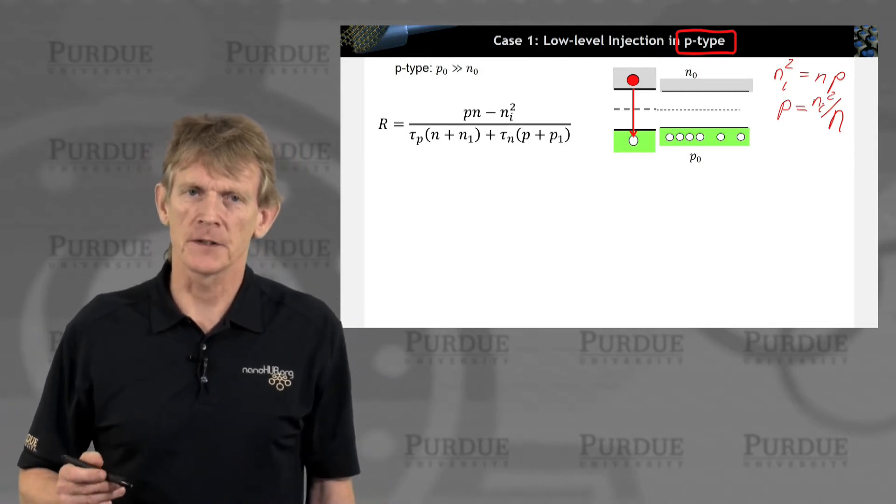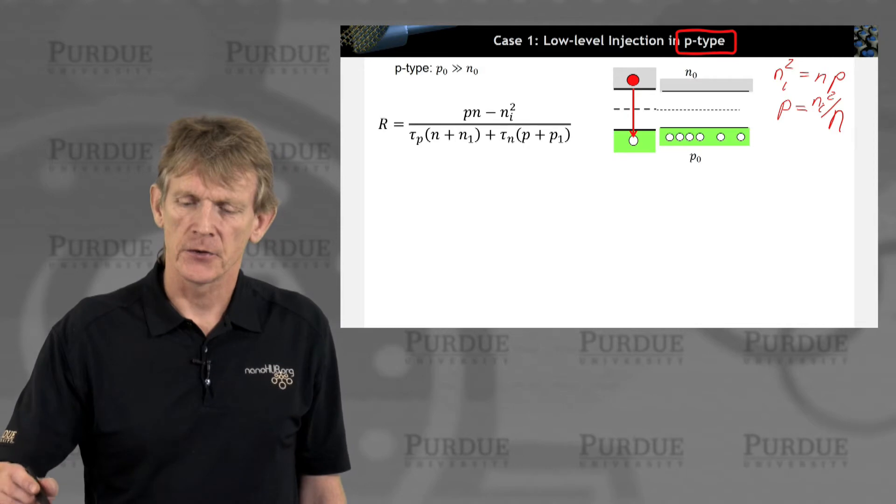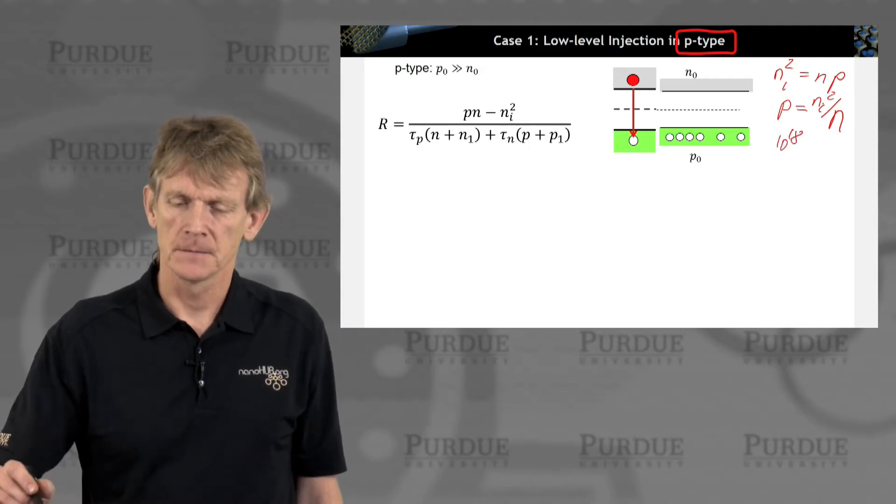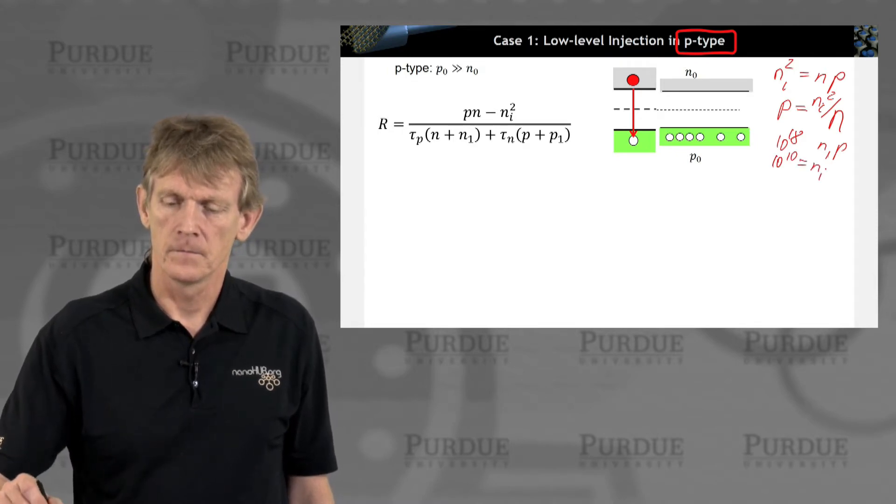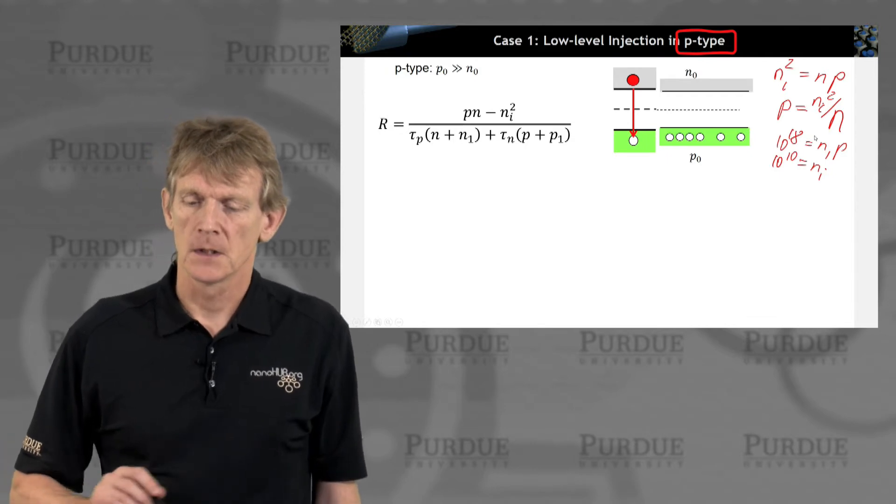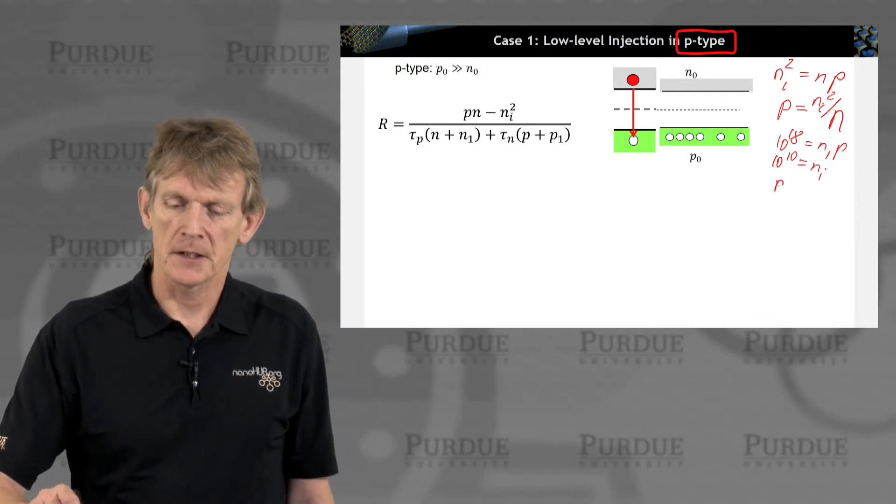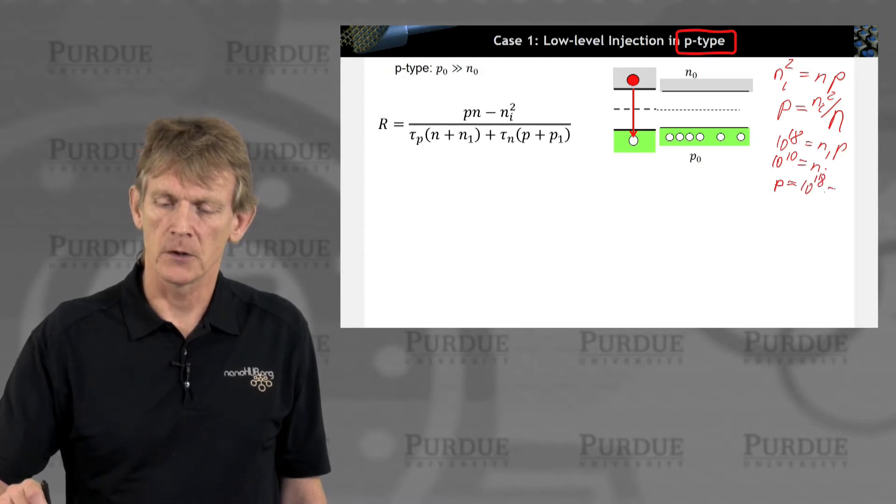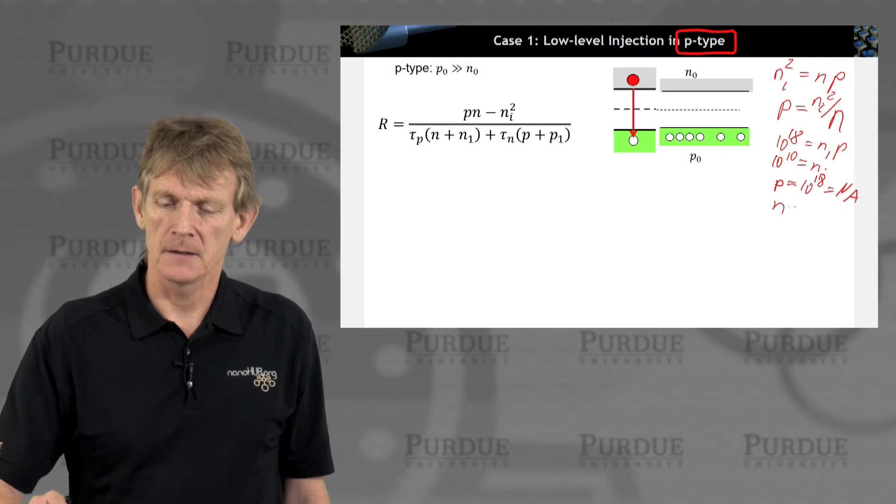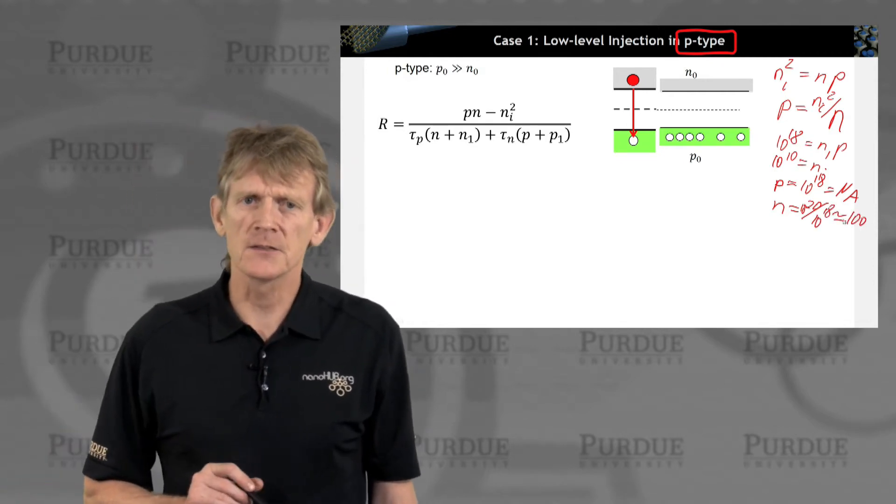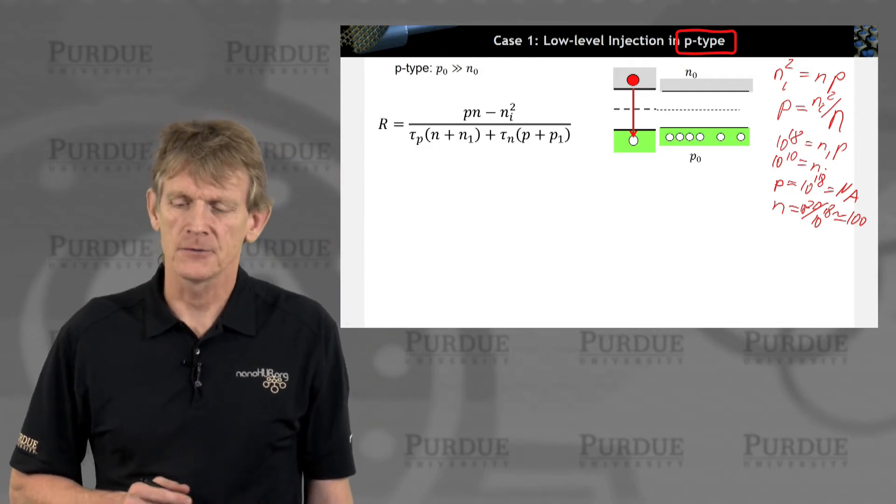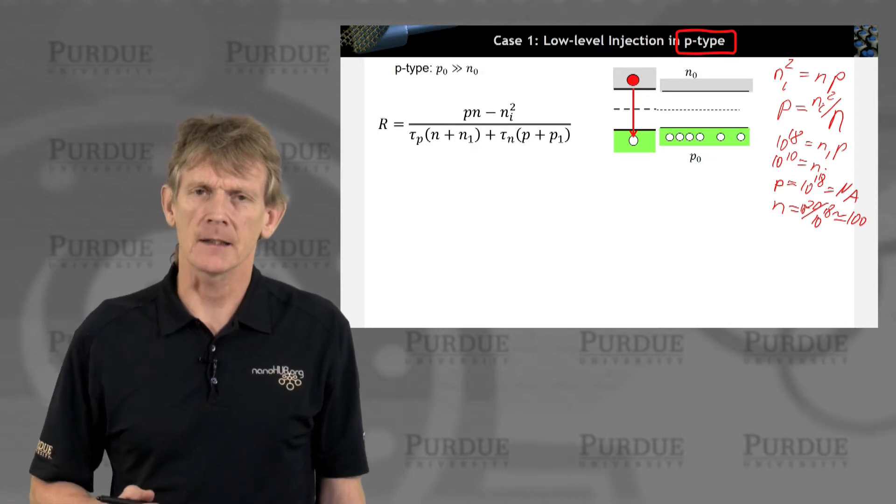Just to get you some ideas again what those mean, to get some numbers in your head. So typical doping could be 10 to the 18 for p. Ni is typically 10 to the 10 in silicon. So if the majority carrier is doped, say, 10 to the 18 with some number of acceptors, that means n, in this case, is 10 to the 20 divided by 10 to the 18, which is 100. So there's a gazillion and one holes and a hundred electrons. So that imbalance is just dramatic.